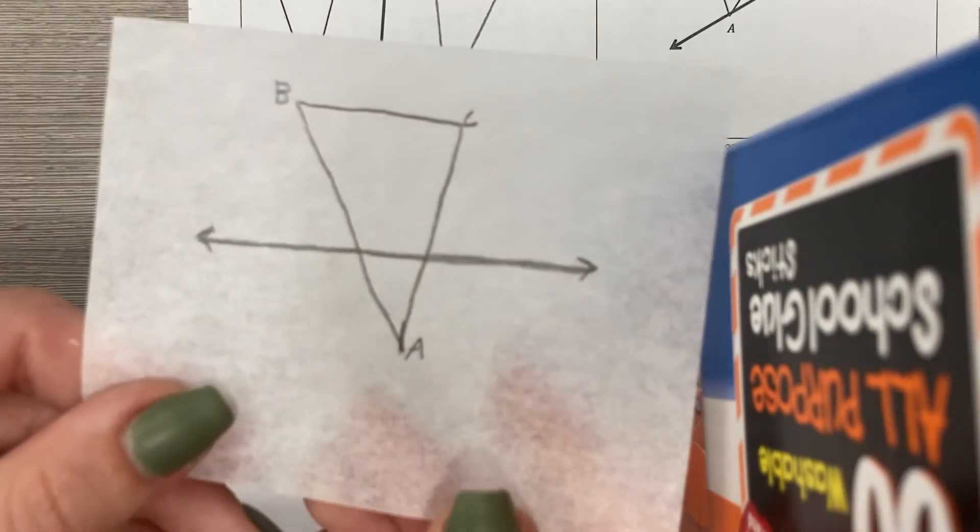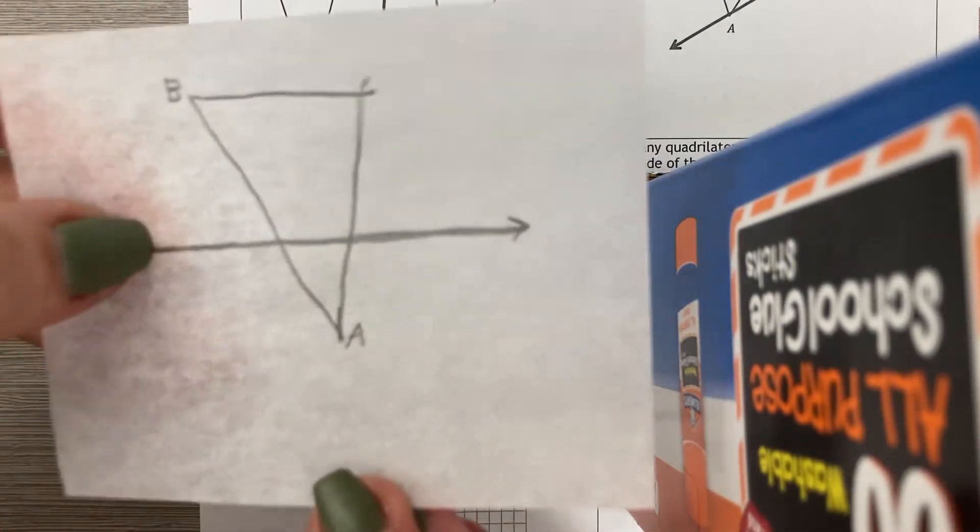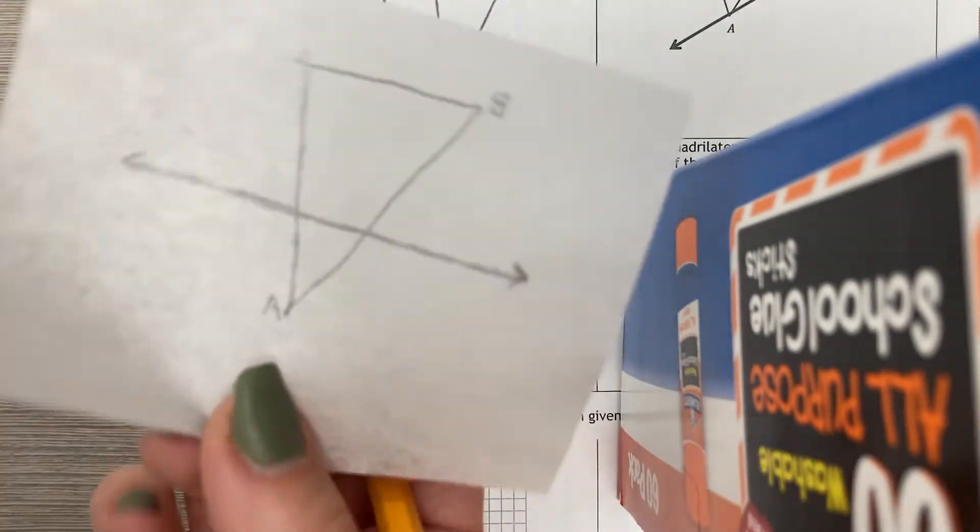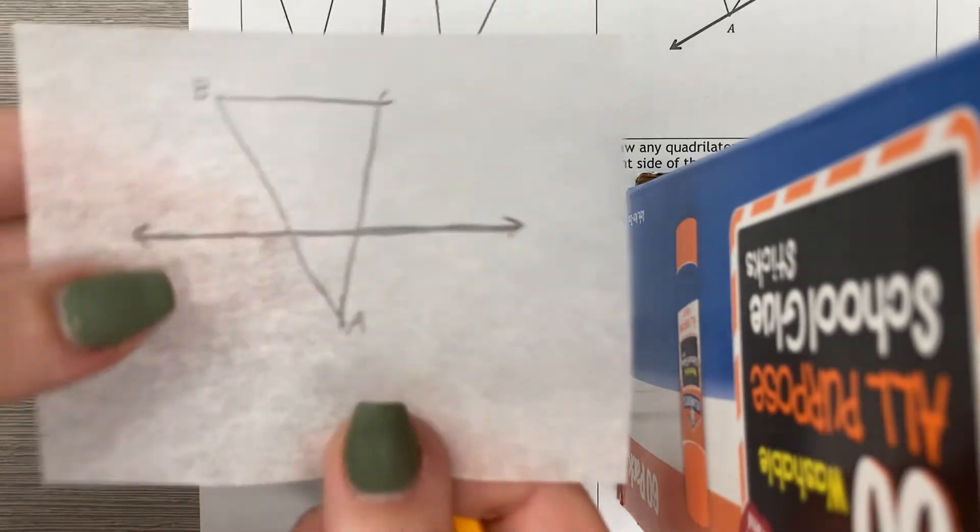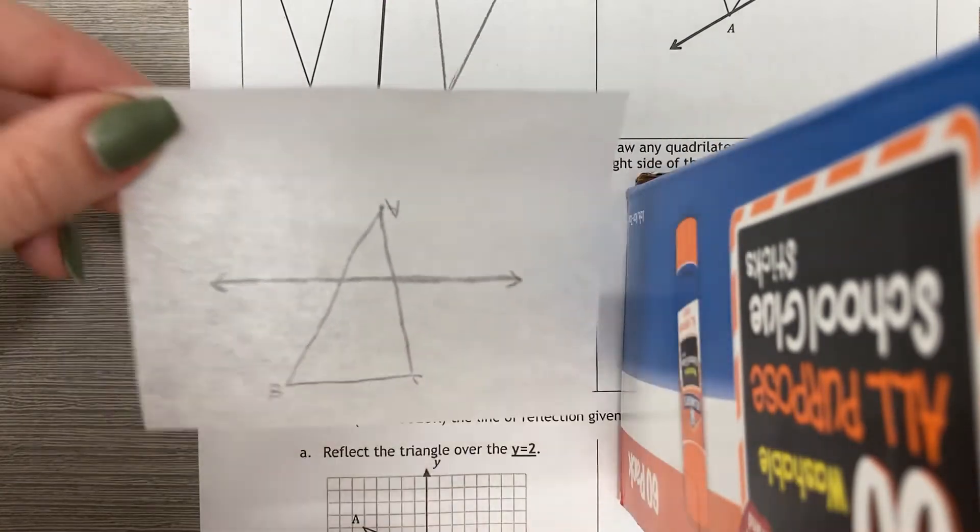Then take your tracing paper that now looks like the diagram that you saw and you are going to flip it over. I have two options. I could flip like this but I want to make sure that I'm flipping over that line of symmetry. So this time I'm going to flip in that direction, flip over the line of symmetry.